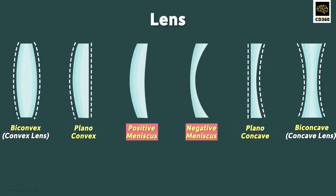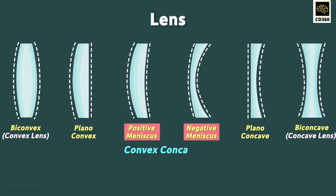What about the remaining two lenses? The name sounds fancy! In these two lenses, one surface is curved inward and one surface is curved outward. Hence, a meniscus is also called a convex-concave lens.